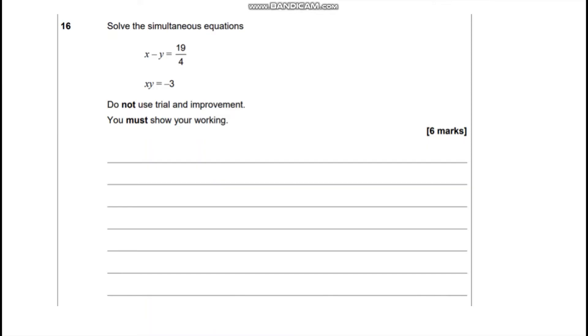In this video we're looking at question 16 from the 2022 paper 1 for the further maths GCSE. It's given us a pair of simultaneous equations and it says do not use trial and improvement, but solve the equation.